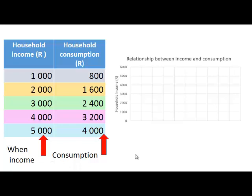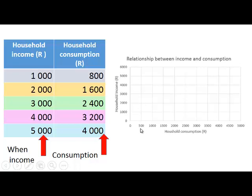We show household income on the vertical axis, with values increasing from zero up to six thousand. On the horizontal axis we show household consumption, increasing from zero to five thousand rand.